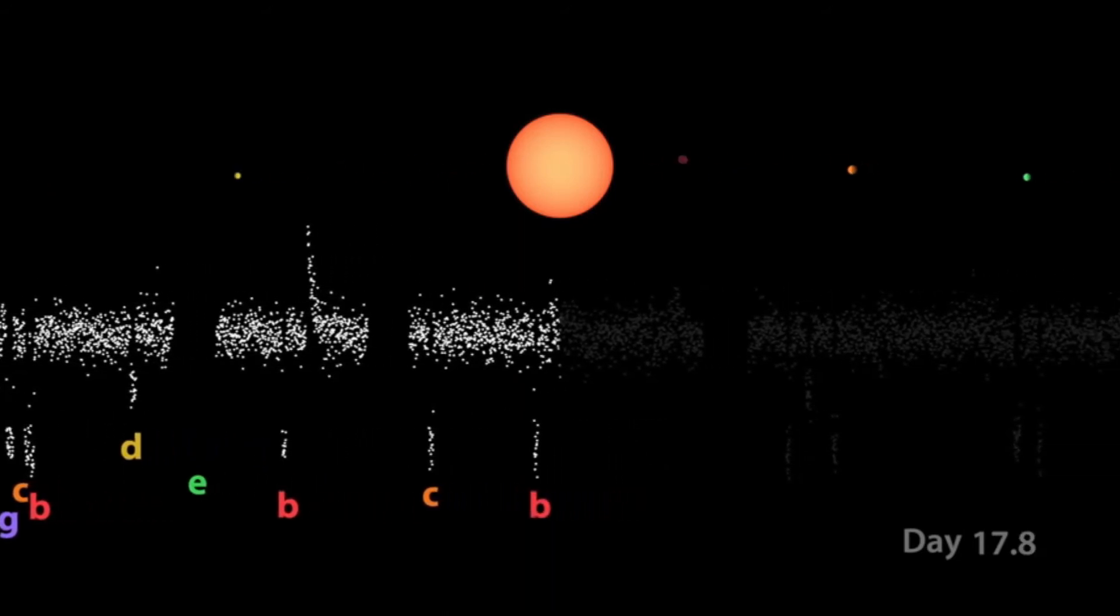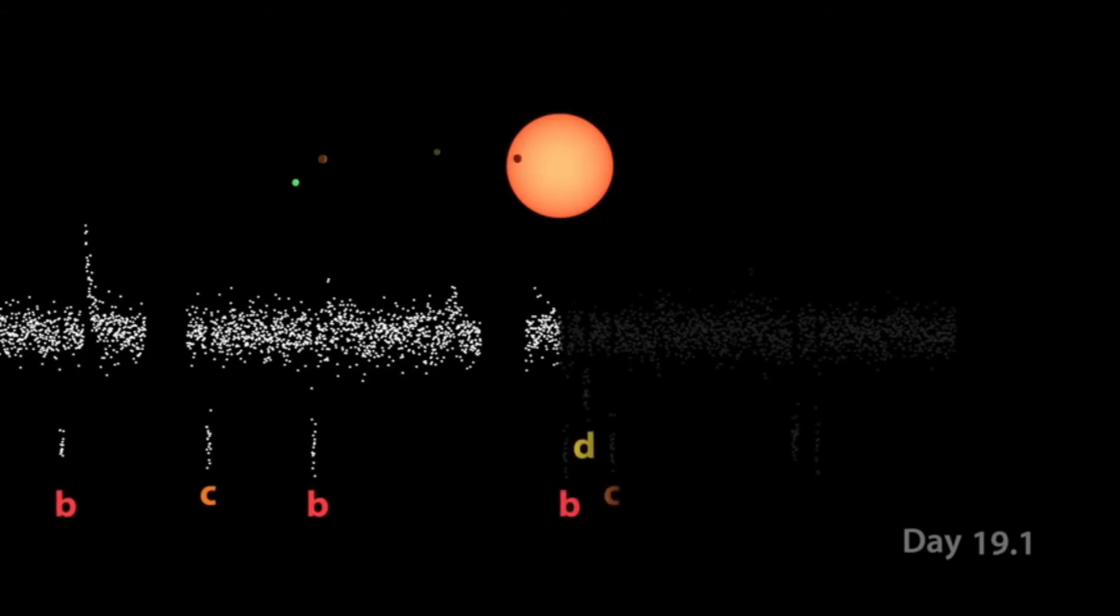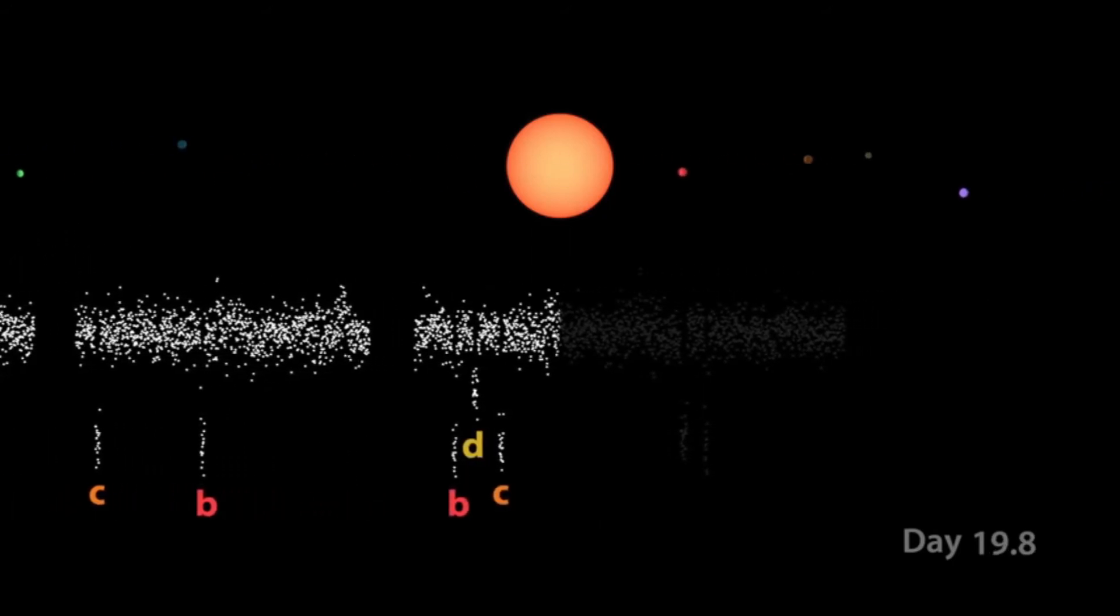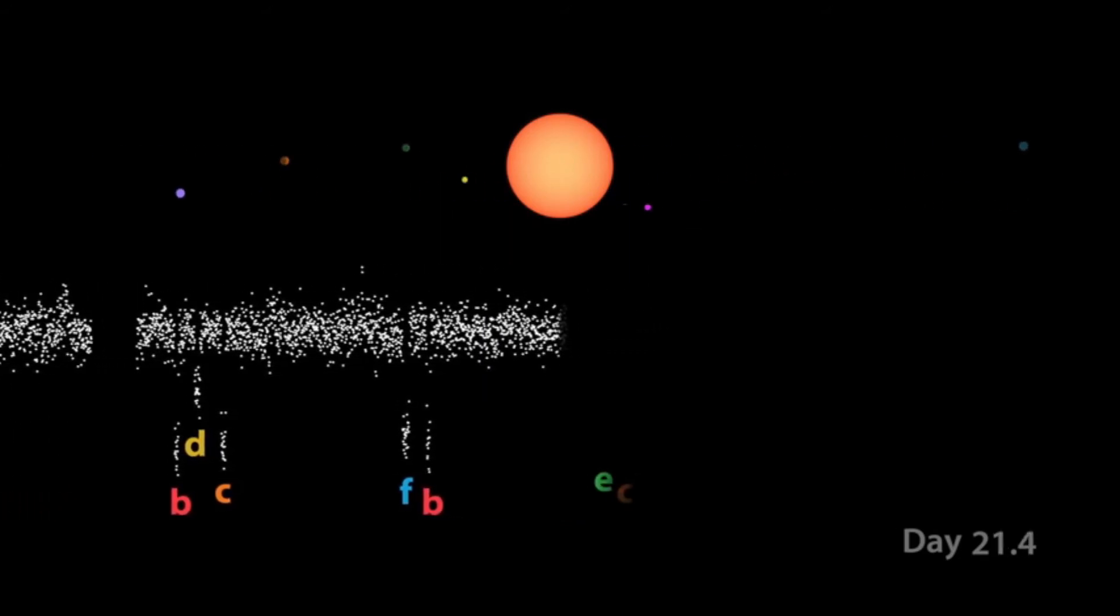The orbital motions of the TRAPPIST-1 planets form a complex chain with three-body Laplace-type resonances linking every member. Most sets of orbits similar to the set found at TRAPPIST-1 are unstable, causing one planet to come within the Hill sphere of another or to be thrown out.